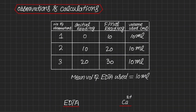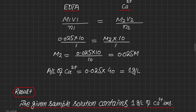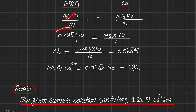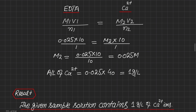Next we take observations and perform calculations. From three readings, the mean volume of EDTA used is 10 mL. Using the molarity formula M₁V₁/N₁ = M₂V₂/N₂: M₁ is the molarity of EDTA (0.025 M), V₁ is the mean volume of EDTA (10 mL), V₂ is the volume of calcium sample (10 mL), and N₁ = N₂ = 1 because one molecule of EDTA complexes with one atom of calcium.